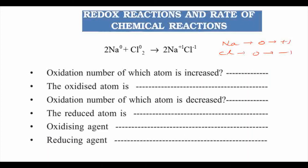The oxidation number of which atom is increased? The answer is sodium — so the oxidized atom is sodium, and the reducing agent is sodium. Then the oxidation number of which atom is decreased? The reduced atom is the oxidizing agent. So sodium is the reducing agent and chlorine is the oxidizing agent.